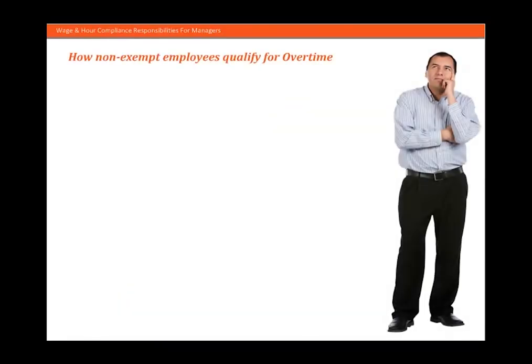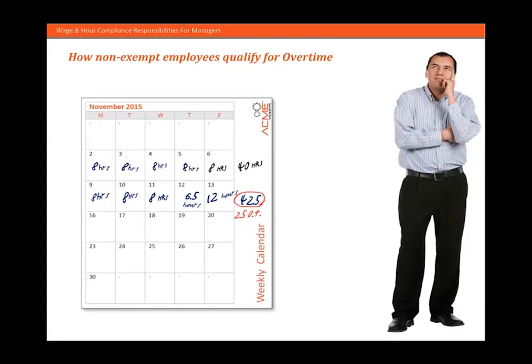Who specifically is eligible for and qualifies for overtime? In most cases, a non-exempt employee is eligible for overtime if they work in excess of 40 hours in one work week, which by the way is not the same as a pay period. At ACME, a typical work week is Monday through Sunday. In some states or in some plans where non-exempt employees are covered by a union contract, employees may be eligible for overtime pay after 8, 10, or 12 hours worked in a day.